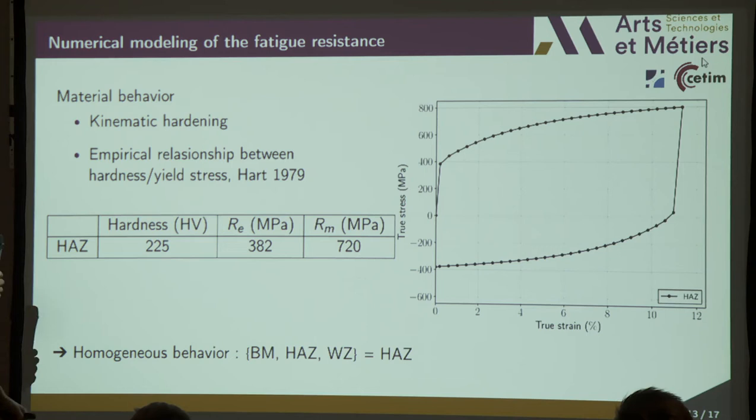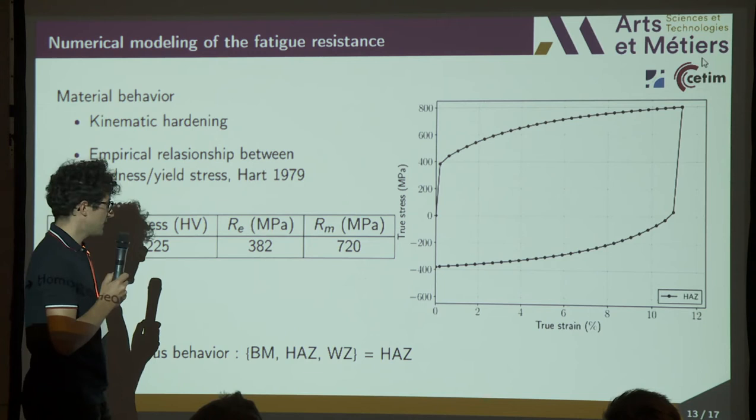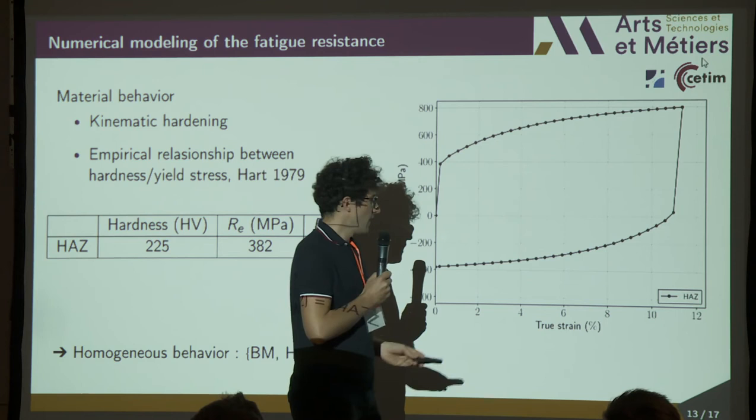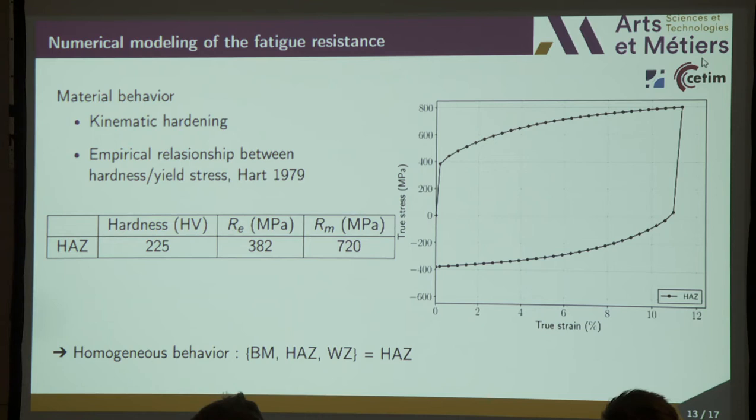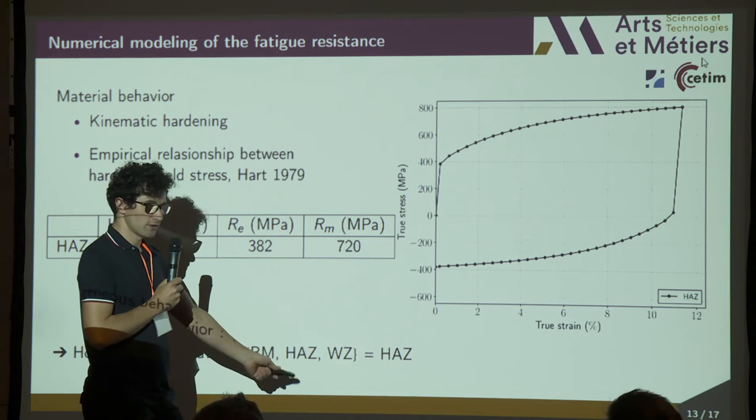About the material behavior, we suppose a kinematic hardening behavior. To identify the material parameters, we used an empirical relationship between hardness and stress proposed by Artt in 1979. This graph gives the evolution of the true stress according to the true strain of the material model chosen. It is important to note that we suppose a homogeneous behavior for the base metal, heat-affected zone, and welded zone, all equal to the heat-affected zone behavior.